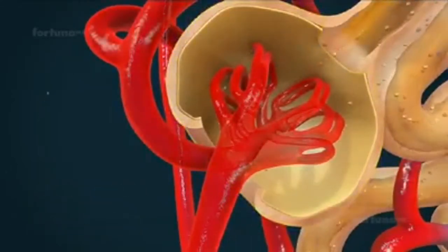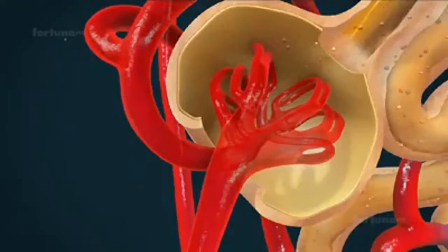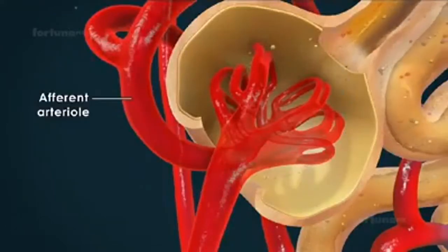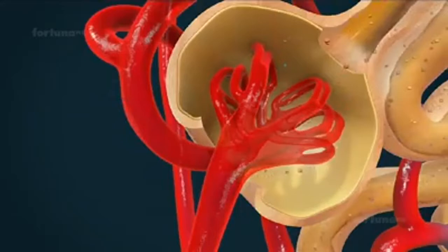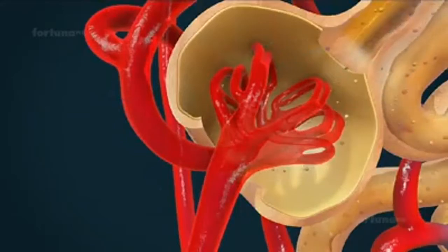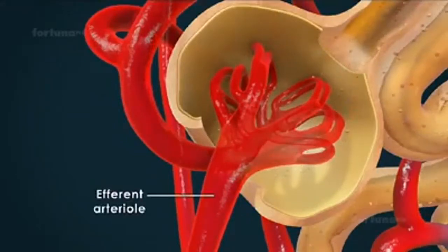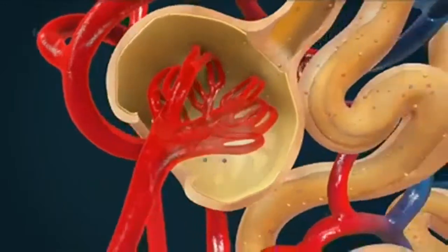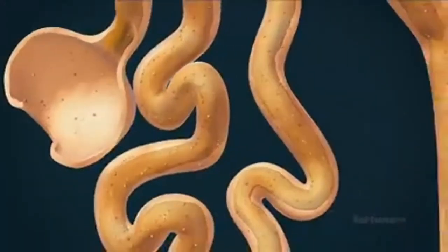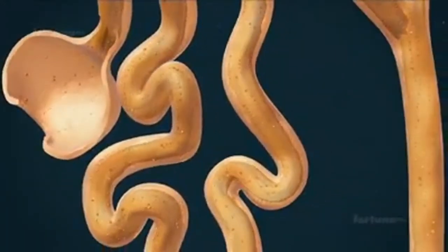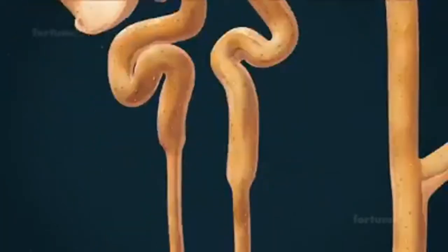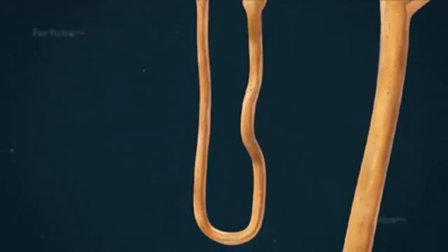Blood enters the glomerulus through renal arterioles known as afferent arterioles, and once filtered is carried back to the bloodstream through efferent arterioles. The Bowman's capsule continues into the proximal convoluted tubule, which then continues into the renal medulla as a distinct loop known as the loop of Henle.